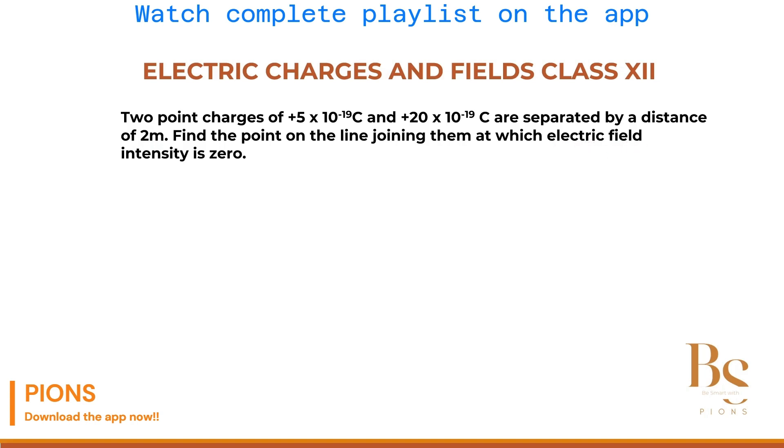Find the point on the line joining them at which electric field intensity is zero. Very common type of question asked in boards. So focus here. First thing is to draw the diagram. Very important.